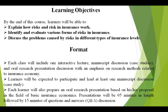The fourth element is about your learning objectives. By the end of this course, learners will be able to explain how risks work in insurance, identify and evaluate various forms of risks in insurance, and discuss the problems caused by risks in different types of research in the field of insurance.